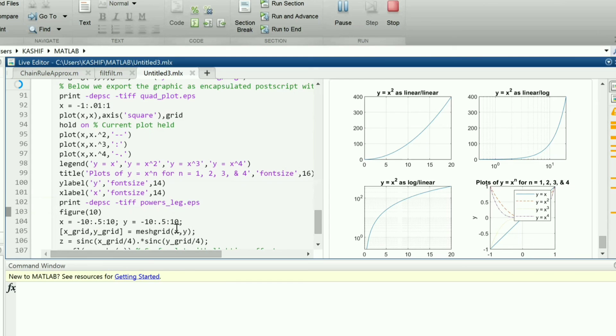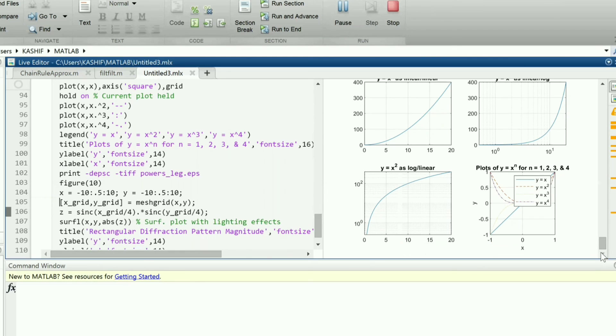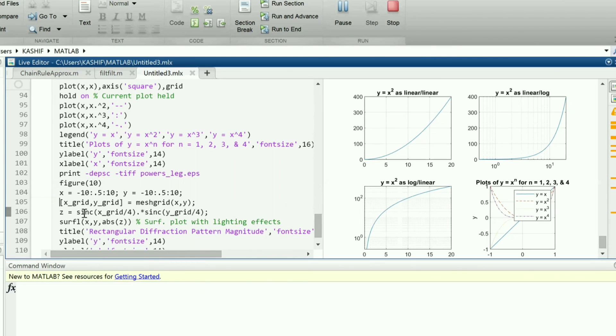This is usually required for comparison such as bit or symbol error rate versus Eb by N0 or signal to noise ratio. A figure can be saved in EPS or TIFF formats and later used in text documents, or can be saved in fig format and reloaded in MATLAB.